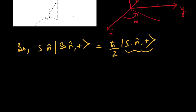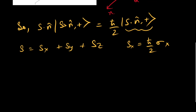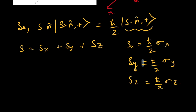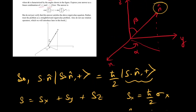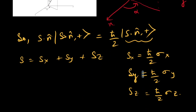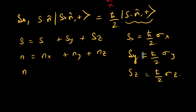We know that S can be written as Sx + Sy + Sz, and we know that Sx = ℏ/2 · σx, Sy = ℏ/2 · σy, and Sz = ℏ/2 · σz. We'll take the arbitrary n̂ vector given and break it into its three components for the x, y, and z axes. For convention, let's call x as 1, y as 2, and z as 3.